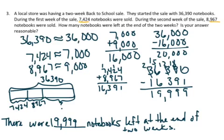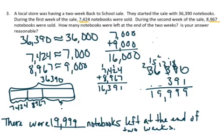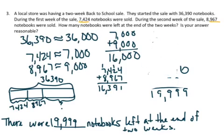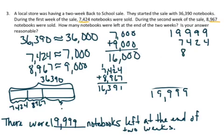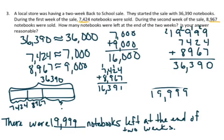So to check my answer, I'm going to add the notebooks that were left, which is 19,999, and the notebooks they sold the first week, and the notebooks they sold the second week. And when I add these numbers together, it should give me the total number of notebooks that I started with. And it gives me a total of 36,390 notebooks to start.